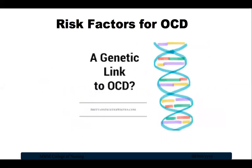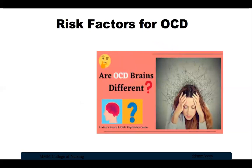Causes of OCD are unknown, but risk factors include a genetic link: twin and family studies show that people with first-degree relatives — such as parents, siblings or children — who have OCD are at higher risk. Imaging studies have shown differences in the frontal cortex and subcortical structures of the brain in patients with OCD, appearing to have a connection with OCD symptoms, though this connection is not yet clear and more research is needed.